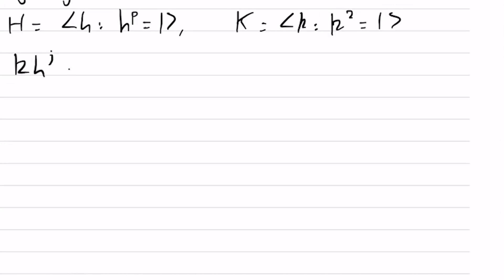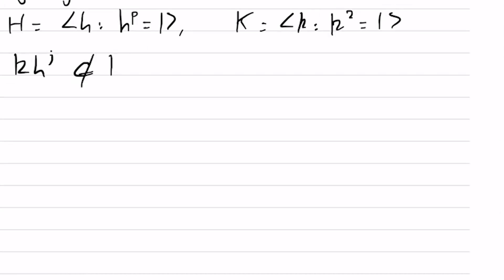Now, we know that k times h to the j is not in H for any j that's not congruent to 0 mod p. Similarly, since if kh to the j equals h to the l, then k equals h to the l minus j, which is in H, which contradicts our assumption that it's an element of order 2.